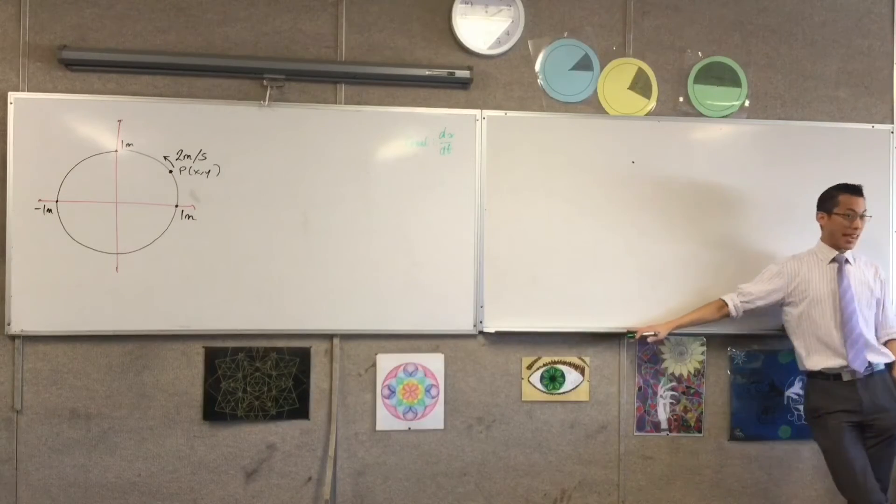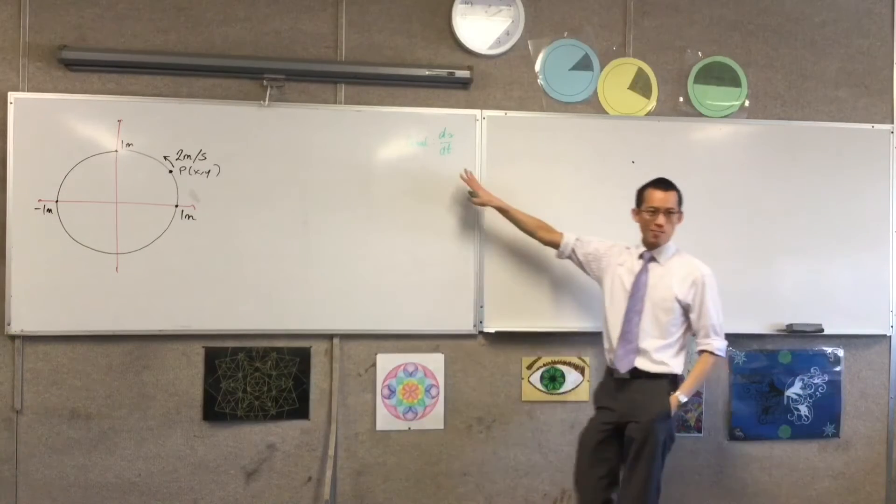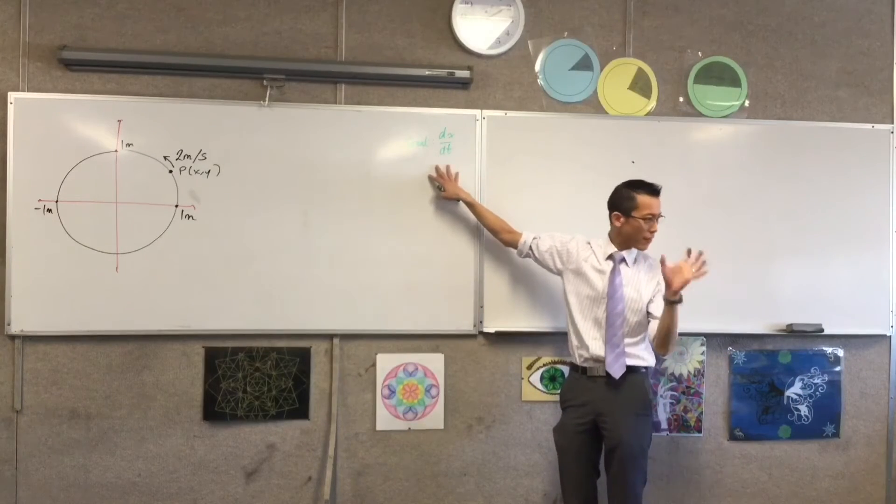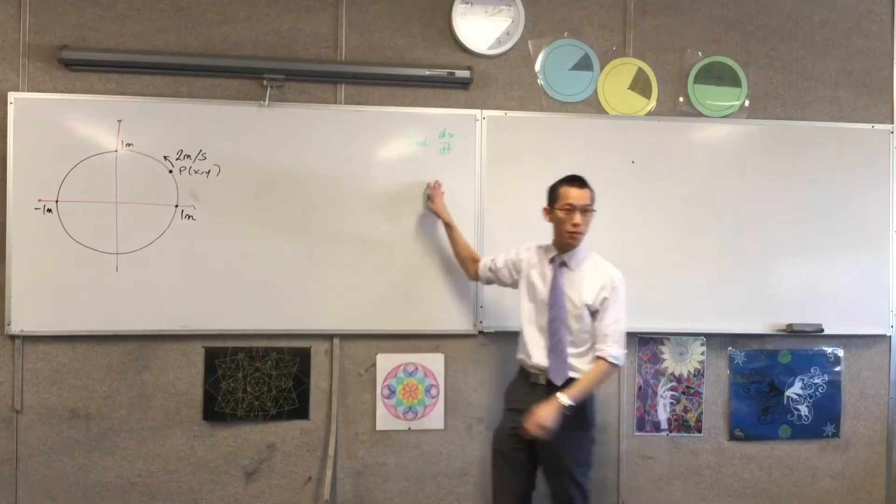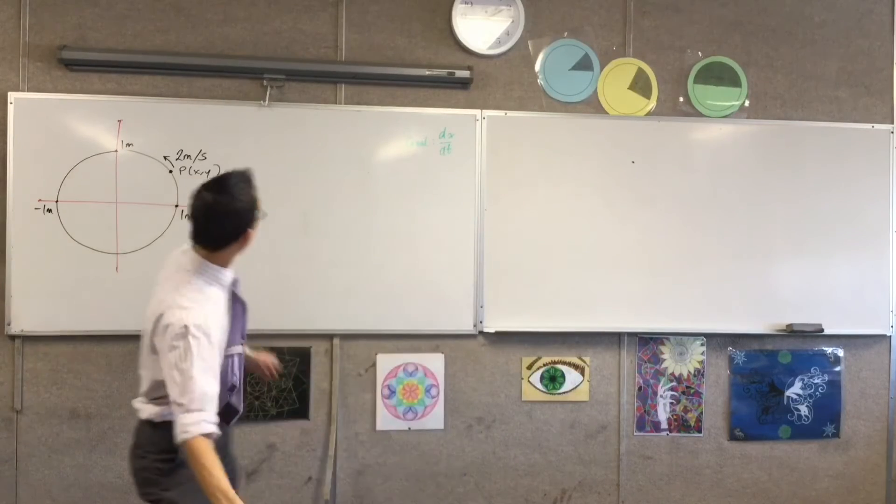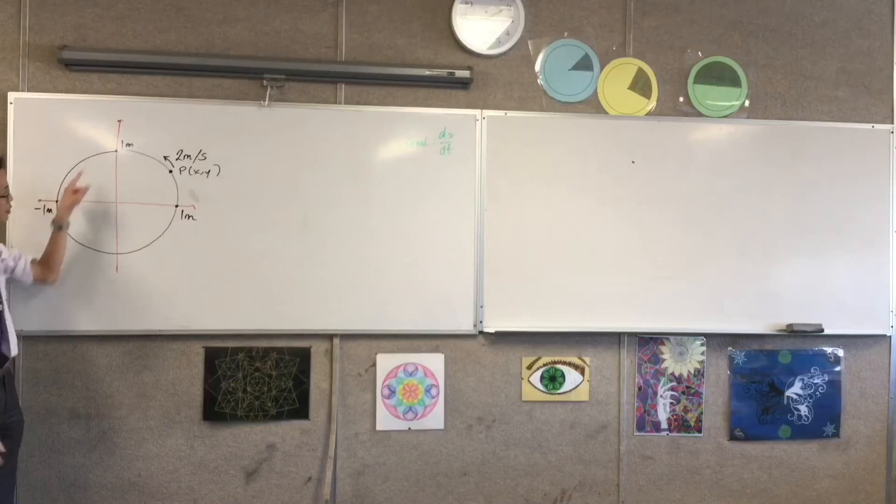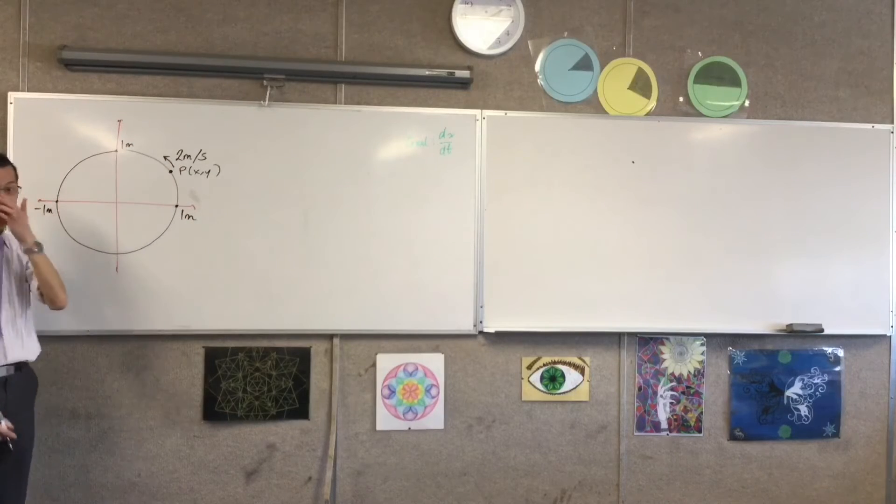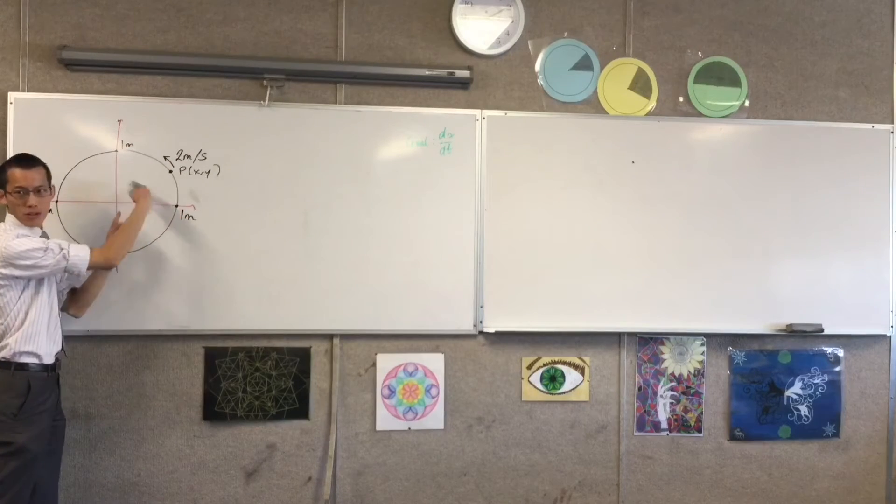Now, as we looked at with the sand pile, you have your goal, but the amount of information we've got is actually quite far removed from this. They've told us, and I'll put it here in the diagram, that it's moving 2 meters per second around the circumference. Now, this is not a horizontal motion or an upward motion.